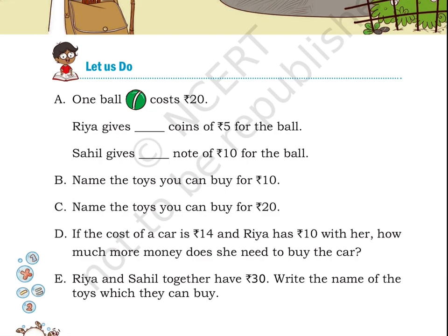E: Rhea and Sahil together have 30 rupees. Write the name of the toys which they can buy.